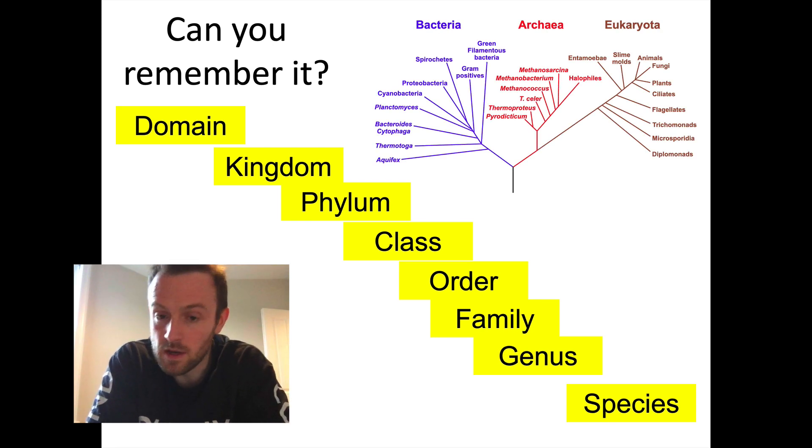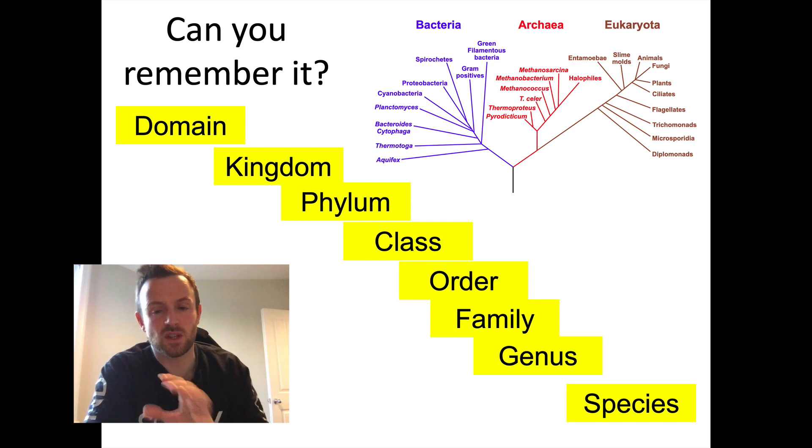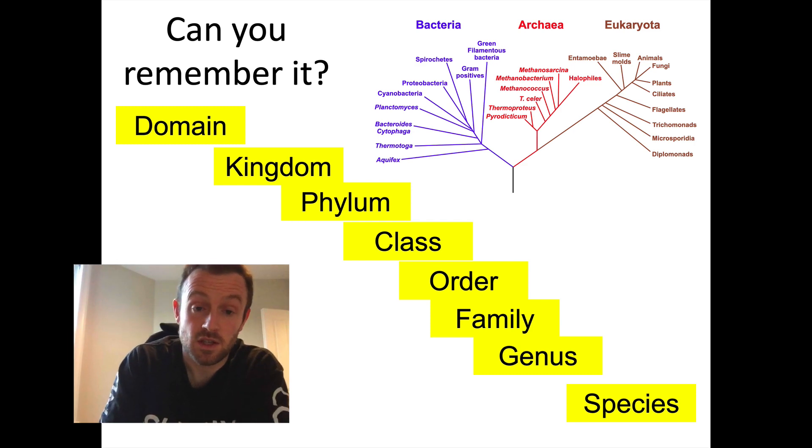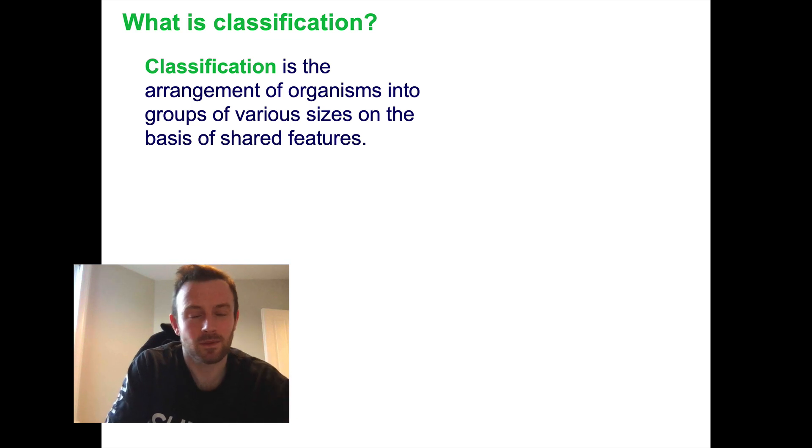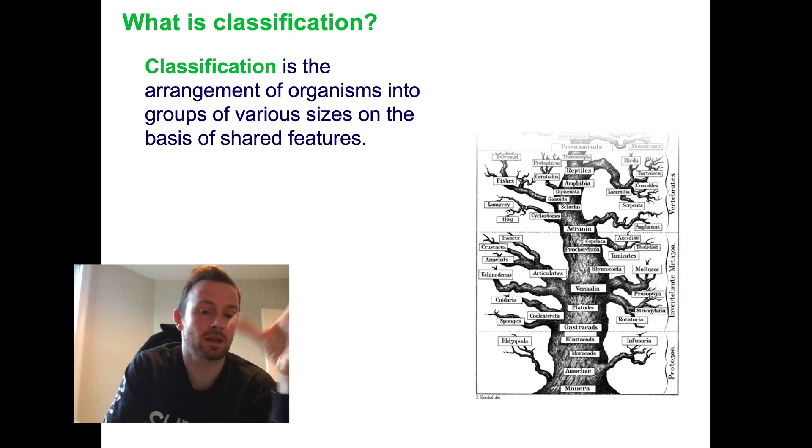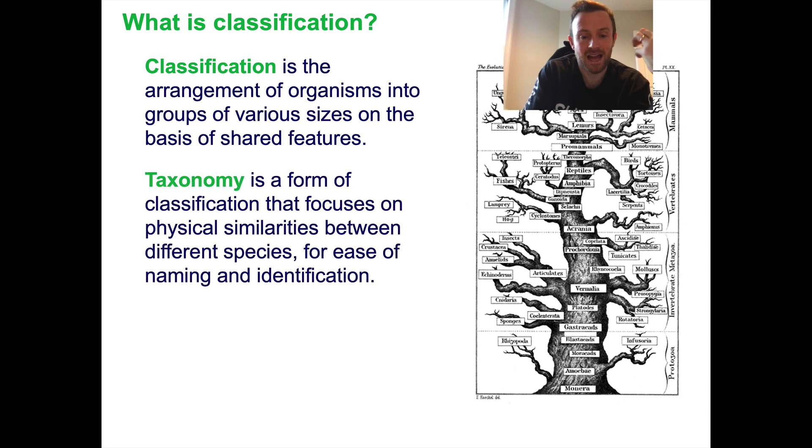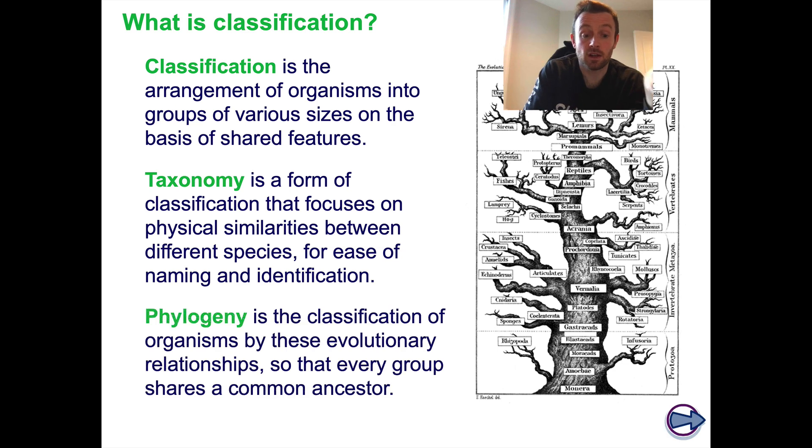I'm going to talk today a little bit about how our idea of classifying life has changed and how we've arrived at this three domain system. Later lessons we're going to talk about the relationships between all the different life forms and how we can map these relationships using something called phylogenetics. But today we're really focusing on the anatomy and the physical features of things that mean that we classify them in certain ways. So just a reminder, classification is grouping things on the basis of shared features. Taxonomy is focusing on the physical similarities, whereas phylogeny is focusing on the evolutionary relationships between them.